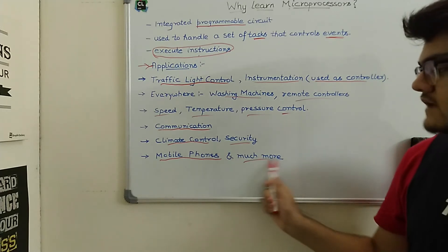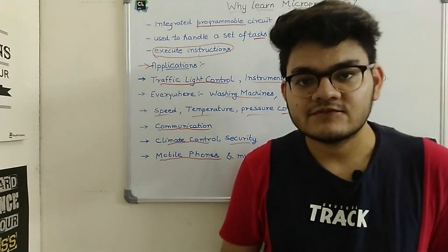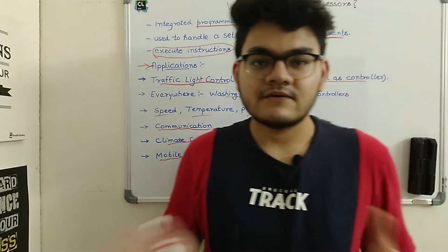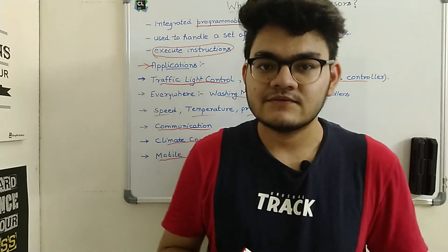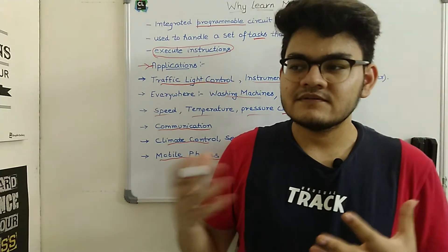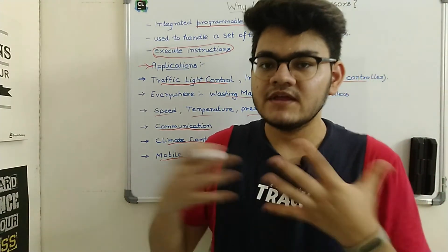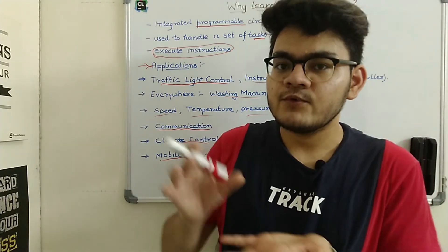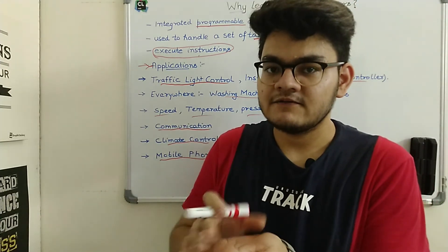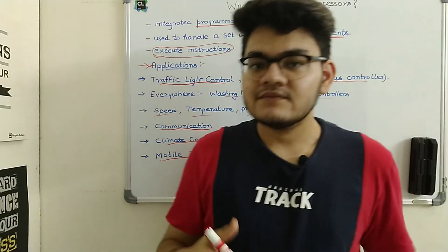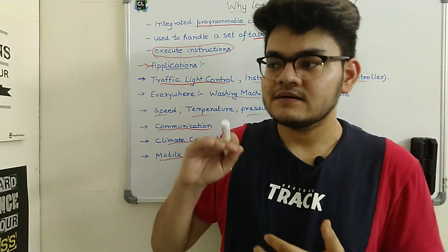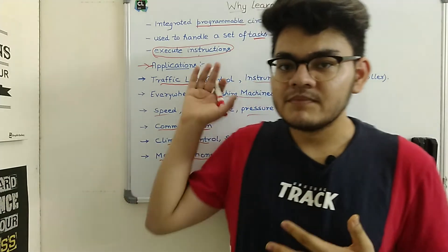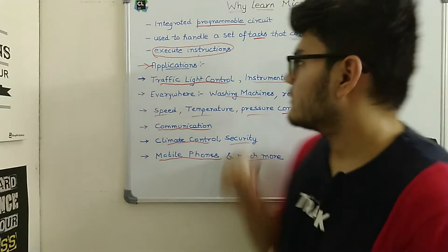Microprocessors are also used in communication, security, climate control, and mobile phones — there are a lot of applications. If you're an electronics or electrical engineering student, learning microprocessors is like studying the various parts of an integrated circuit and learning to program it as needed. As a computer science student, you are learning low-level assembly programming to program the microprocessor or CPU.